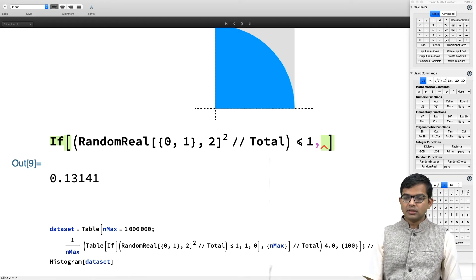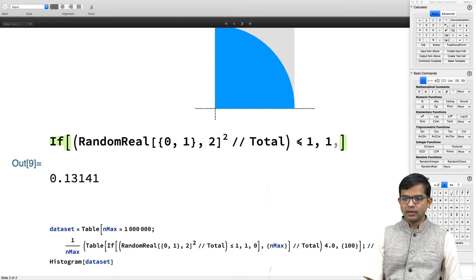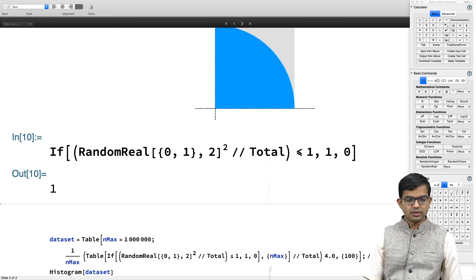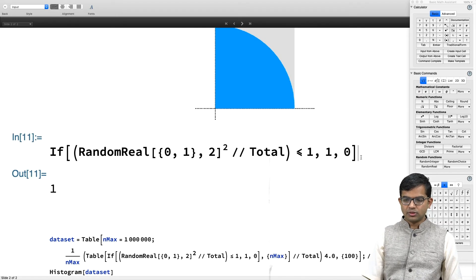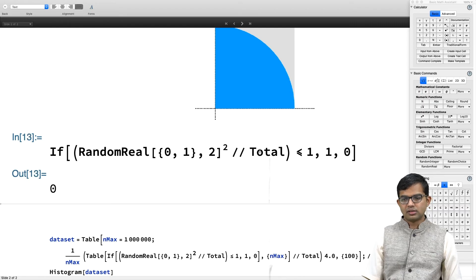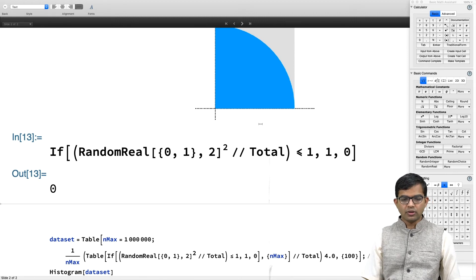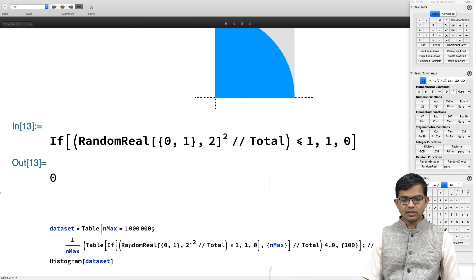If this is less than or equal to 1, then you want the answer 1. And if it is not less than or equal to 1, then you want to get a 0. It gives me a 0 once. Most of the time it is going to give me 1 because it is more likely, but of course from time to time you will get a 0. You can keep on doing this many times and that is what is done here.